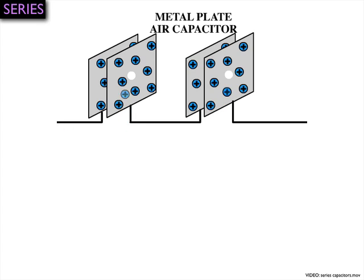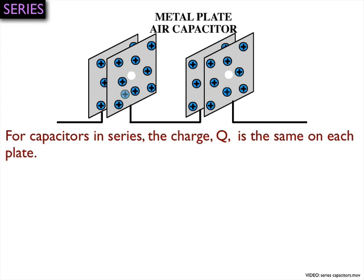What happens is that for capacitors in series, the charge is the same on all the plates. So once you put a certain amount of charge on one plate, for everything else that's in series with that capacitor, the charge is the same for all the plates.